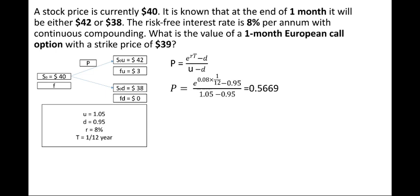p is the probability of upward movement, written over the upper branch. The probability of downward movement is 1 − p = 1 − 0.5669 = 0.4331, written over the lower branch.